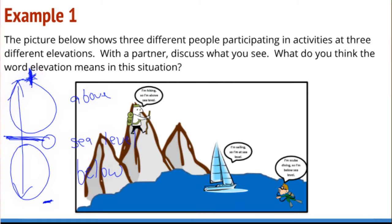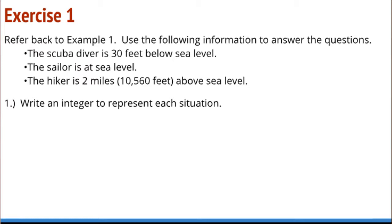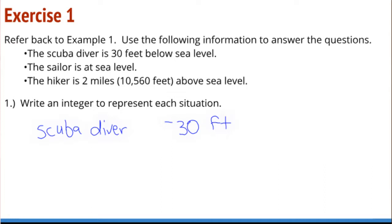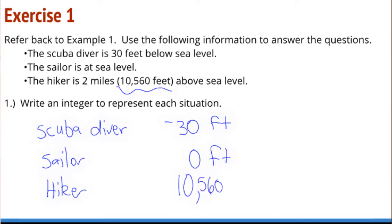Normally we would measure this in feet. Thinking back to Example 1, we're going to use the following information to answer questions. The scuba diver is at 30 feet below sea level — that's negative 30 feet. The sailor is at sea level — that's zero feet. The hiker is two miles, which is 10,560 feet above sea level — so they are at positive 10,560 feet. We can represent these real life situations using integers.